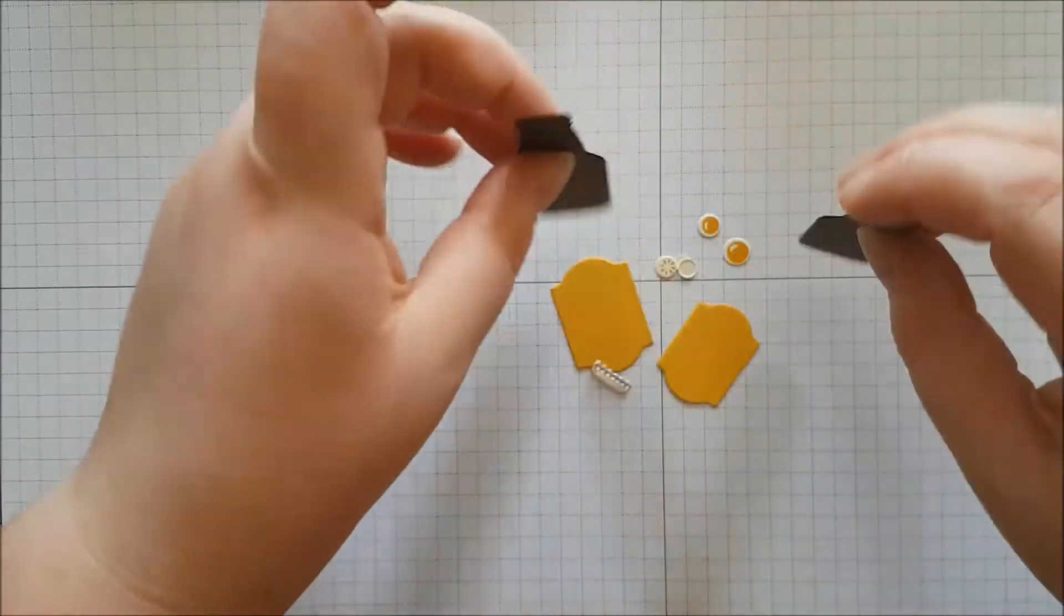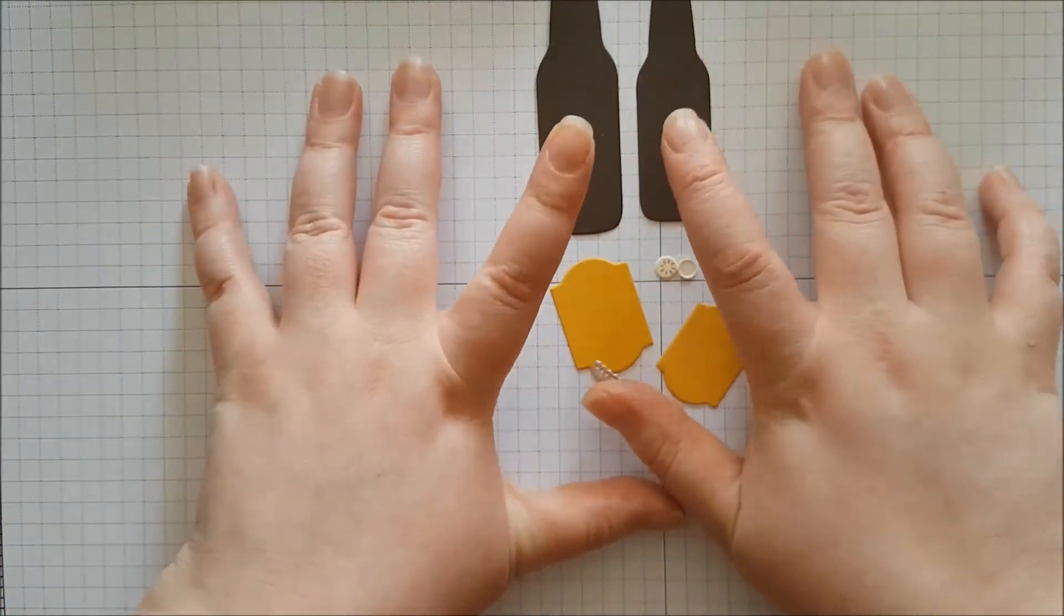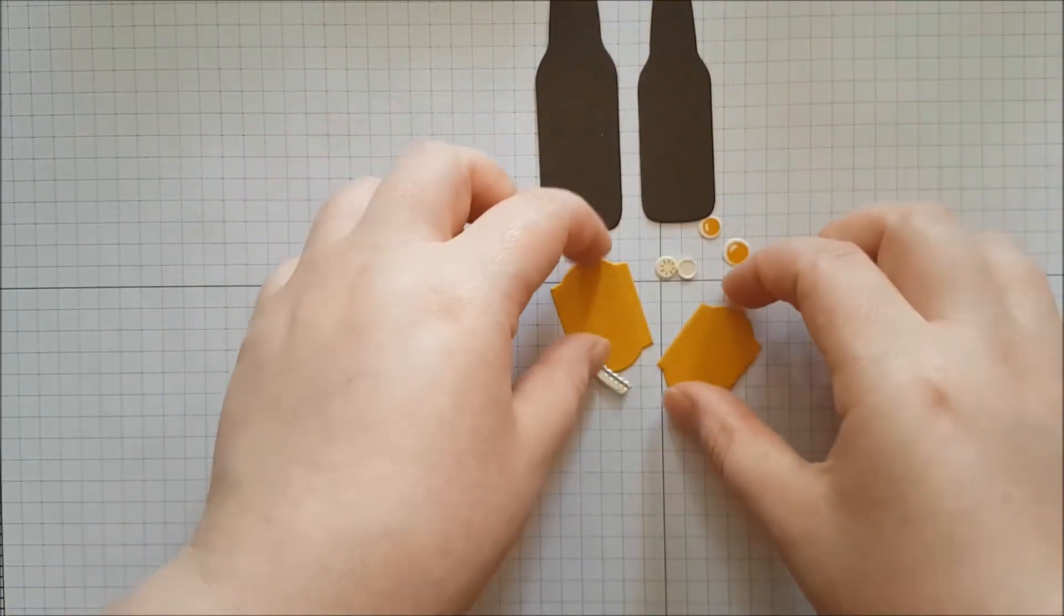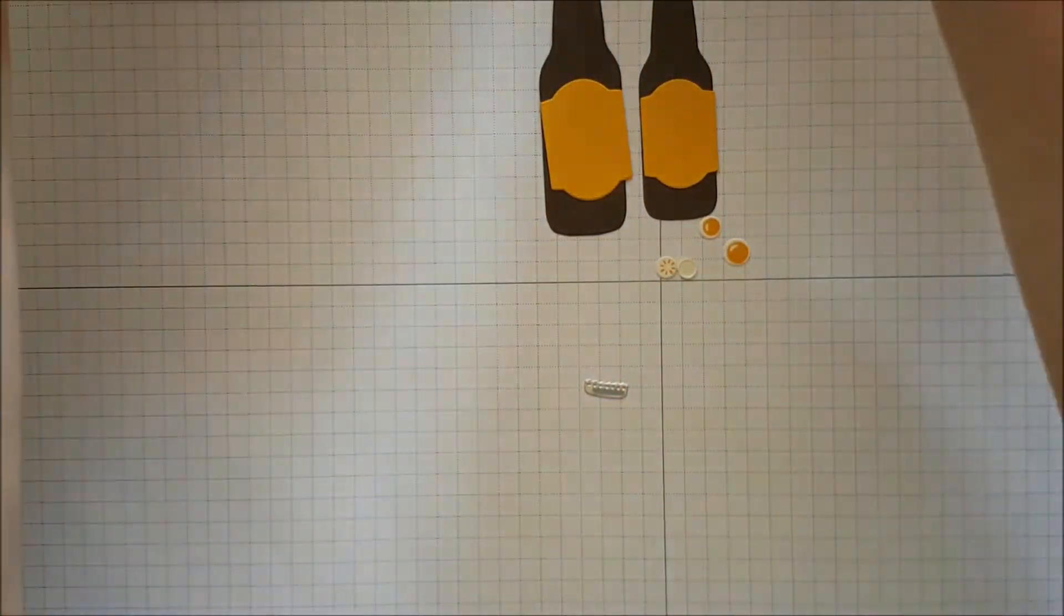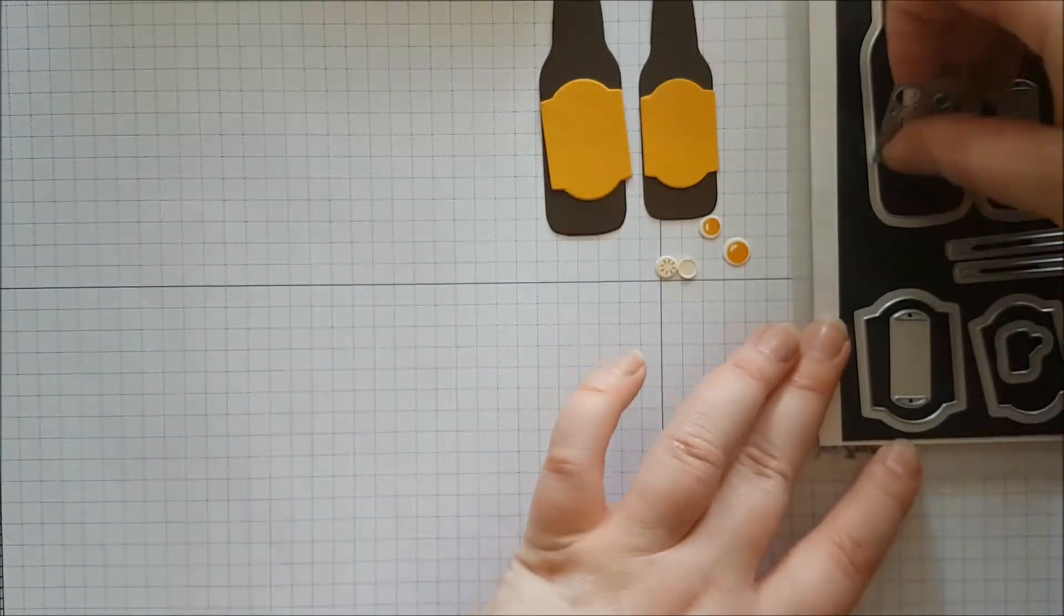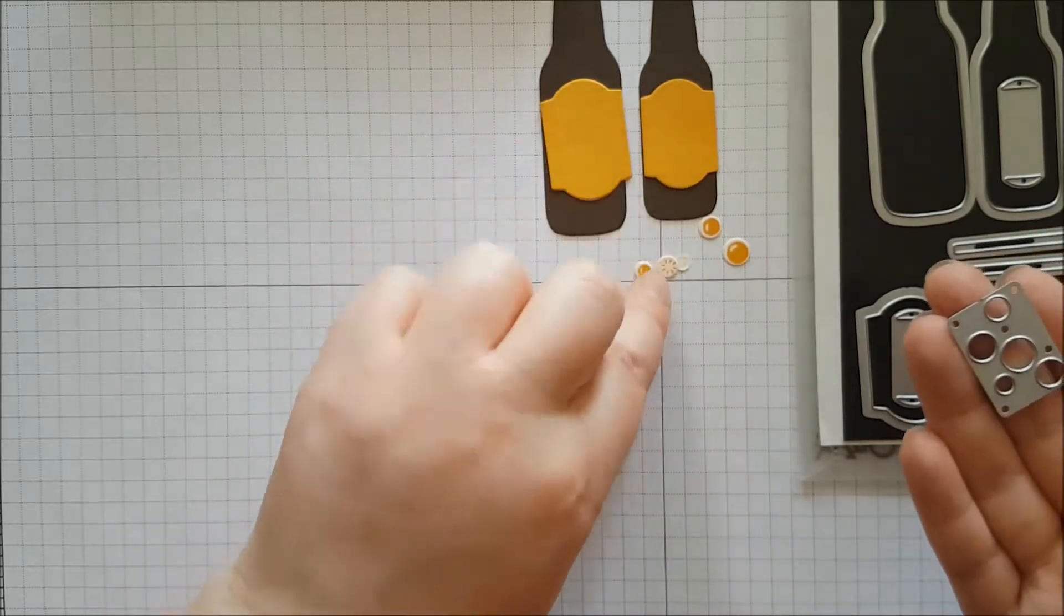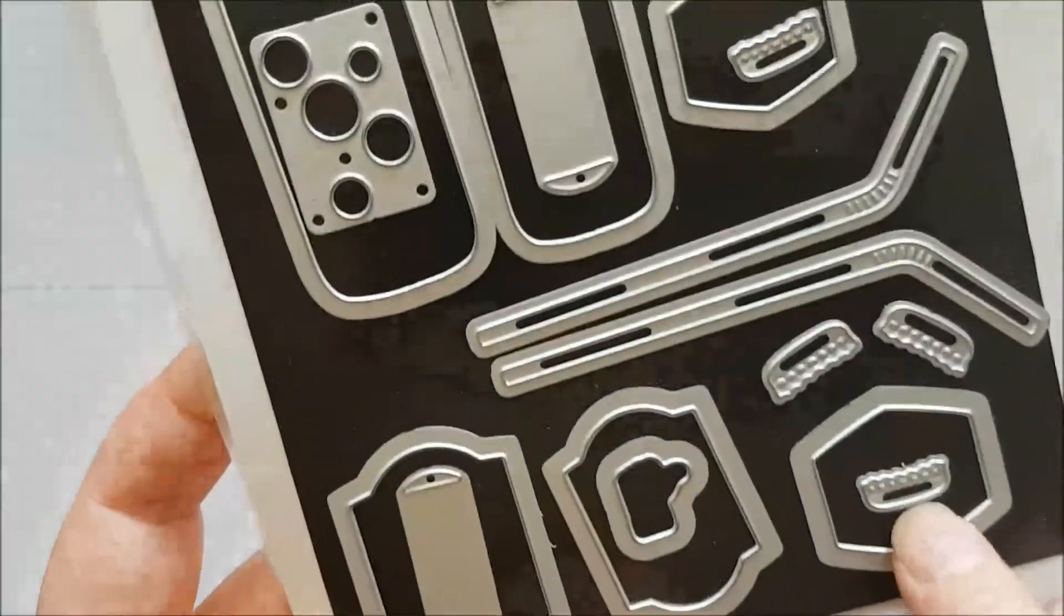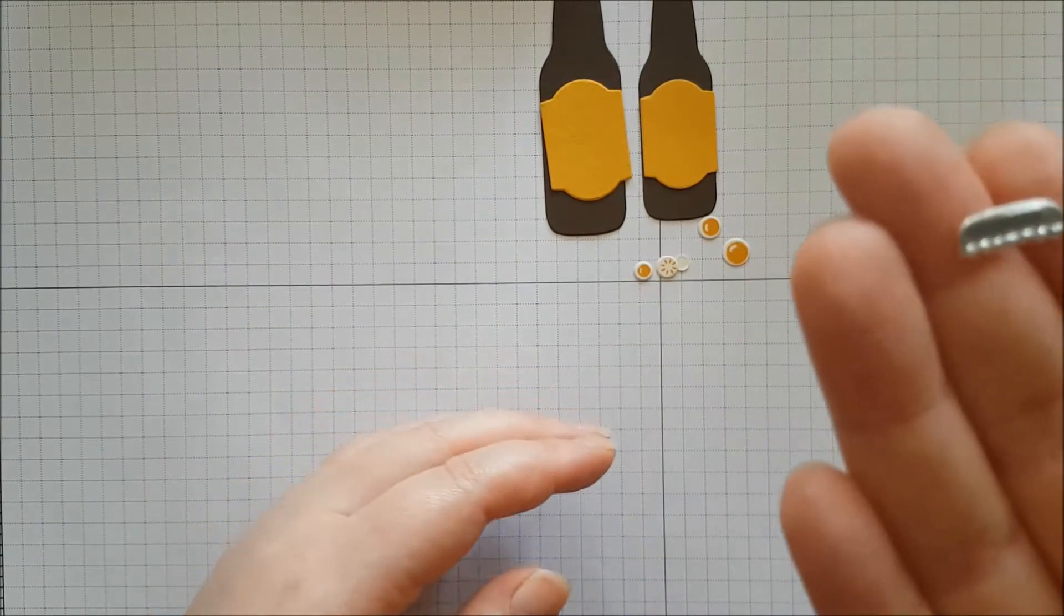There are a few pieces I've already die cut, just so it keeps the video nice and short for you. So I've got Early Espresso for the two bottles. I have got Crushed Curry for their labels. I've used these to cut out the little bubbles, that is also a stamp. And I've used these cute little bottle caps and some silver foil to cut out a bottle top.